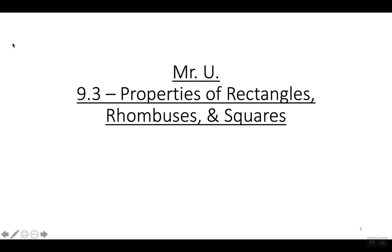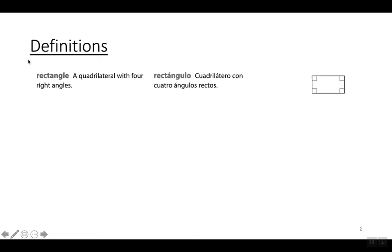Chapter 9.3: Properties of Rectangles, Rhombuses, and Squares. First, let's look at the definition of a rectangle. A rectangle is a quadrilateral with four right angles, as you can see in the picture. Un rectángulo es un cuadrilátero con cuatro ángulos rectos.